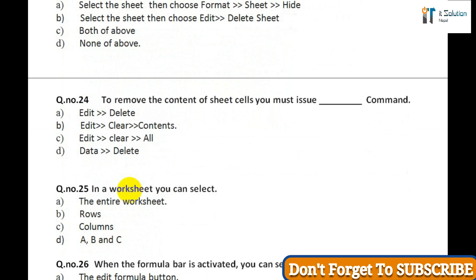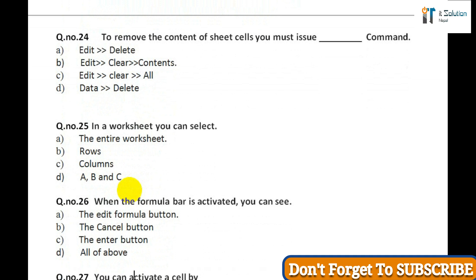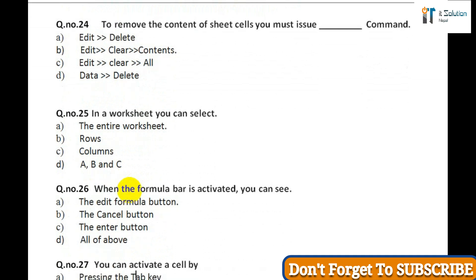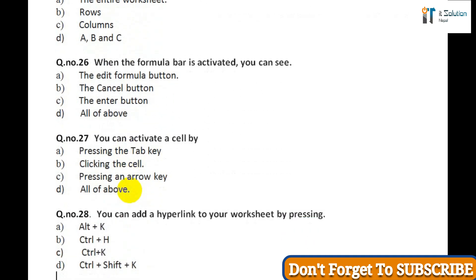Question twenty-one: Which command will you use to convert the column of data into row? A) Cut and paste, B) Edit and paste special transpose, C) Both of above, D) None of above. Question twenty-two: Which is the shortcut key to replace data with another in sheet? A) Ctrl+R, B) Ctrl+Shift+R, C) Ctrl+H, D) Ctrl+F.